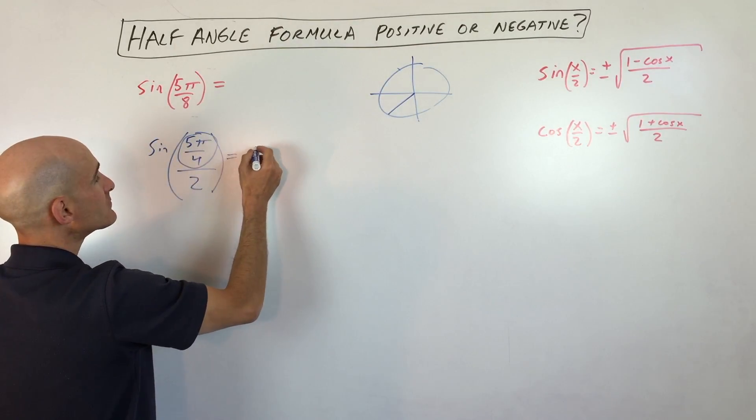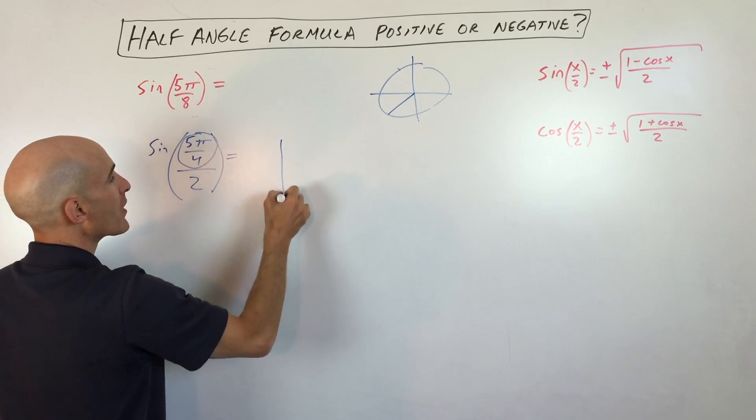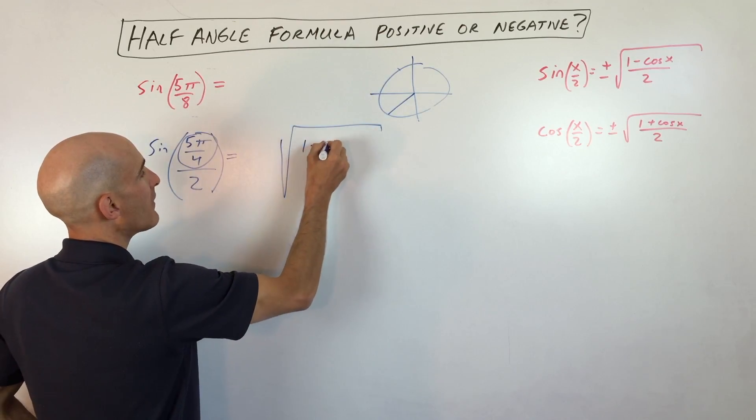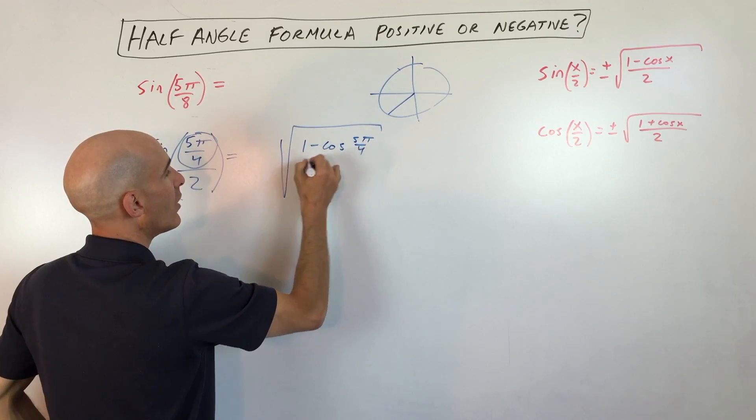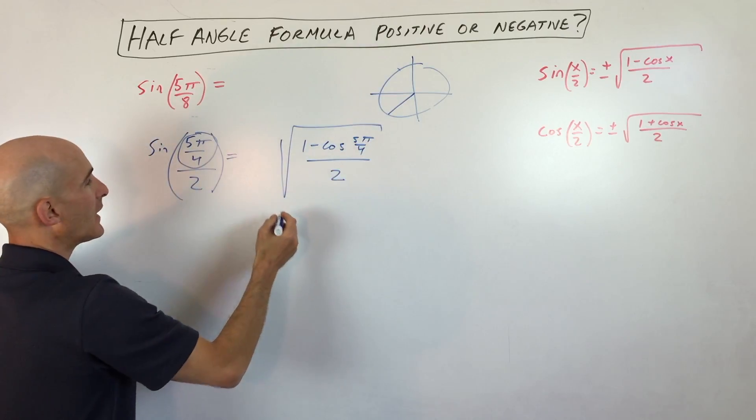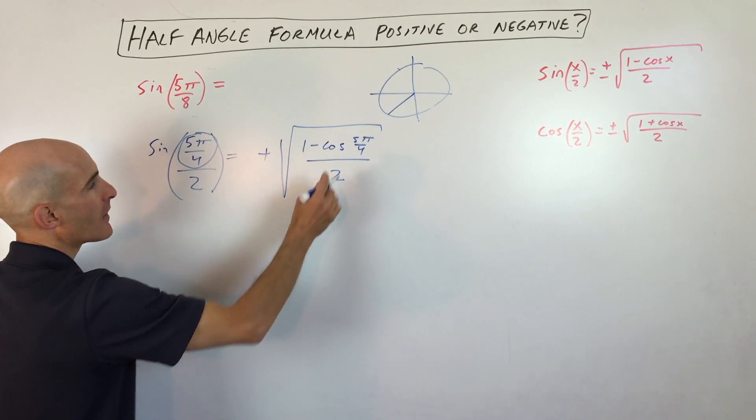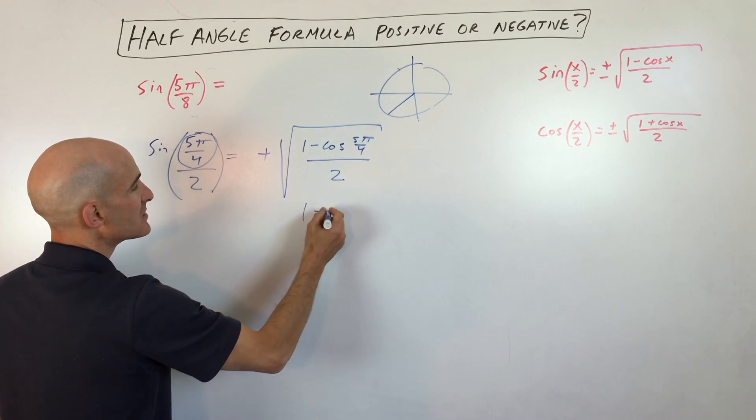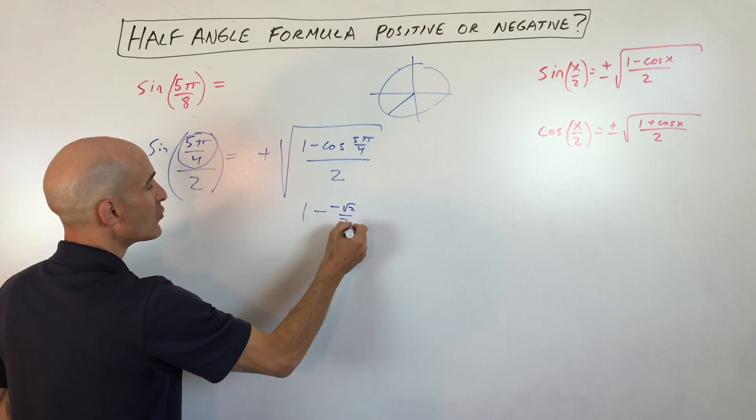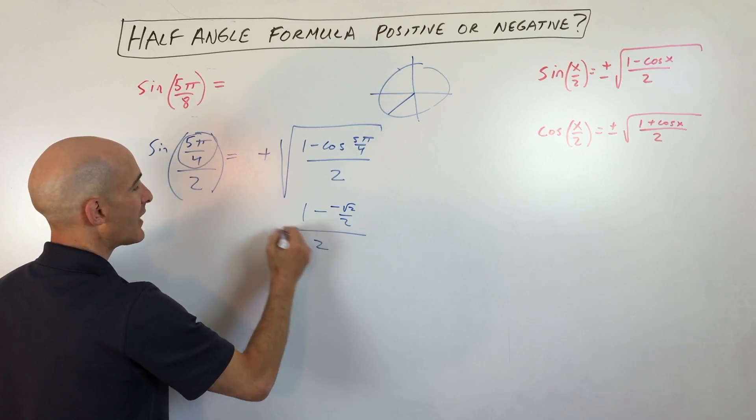This equals the square root of 1 minus the cosine of 5π/4, all divided by 2, and we're taking the positive quantity because we know 5π/8 is positive here in the second quadrant. 5π/4, though, is negative square root of 2 over 2, divided by 2.